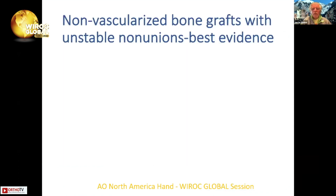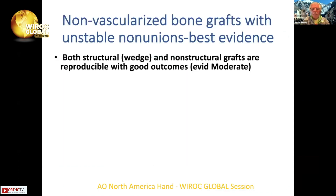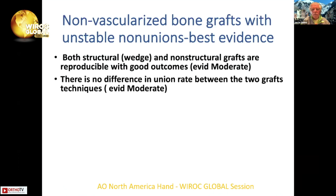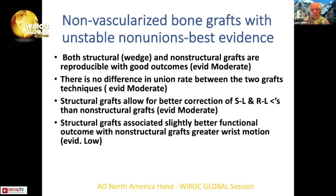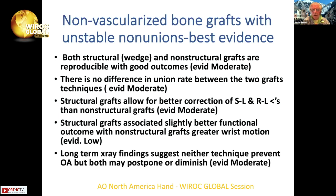Looking at the best evidence in the literature, both wedge structural graft and non-structural graft are reproducible with moderate evidence and good outcomes. There does not appear to be a difference in union rate between the two graft types. Structural grafts help correct carpal malalignment better than non-structural grafts and may be associated with better functional outcomes, although the evidence is low. Long-term findings suggest neither approach will prevent osteoarthritis, but may slow it down.